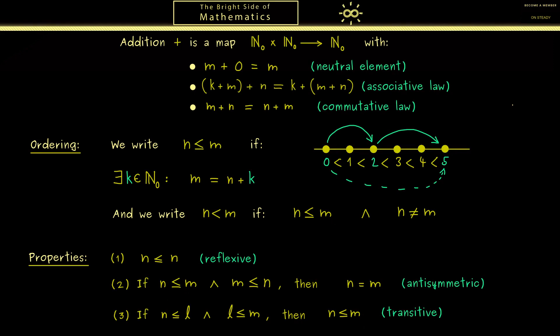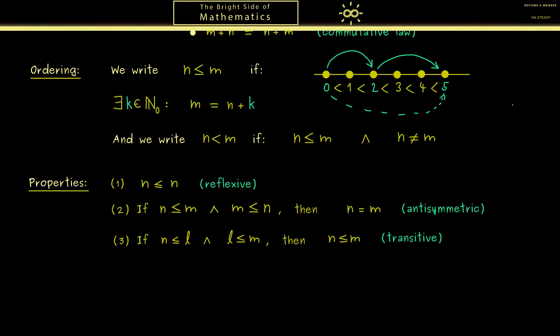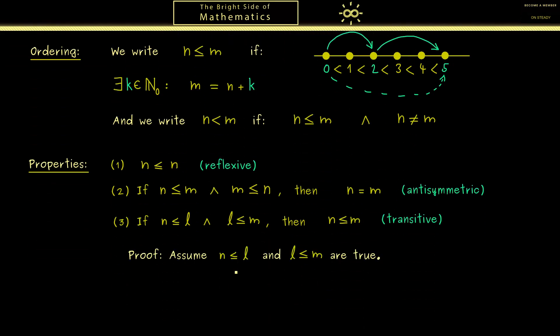Okay, now I think it will be a good exercise to write down a proof for this third property. Therefore let's assume that for three natural numbers n, l and m, these two statements here are true. More concretely, this means that these two statements are true. Which means we find a k₁ such that this equality holds and we find a k₂ such that this equality holds.